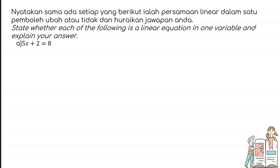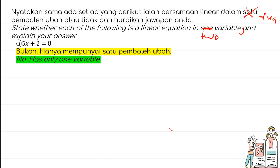Let's look at some examples. Determine which of the following are linear equations in two variables and explain your answer. The first one: 5x + 2 = 8. It is a linear equation, but it only has x as the variable — so it only has one variable. Therefore, the answer is no.